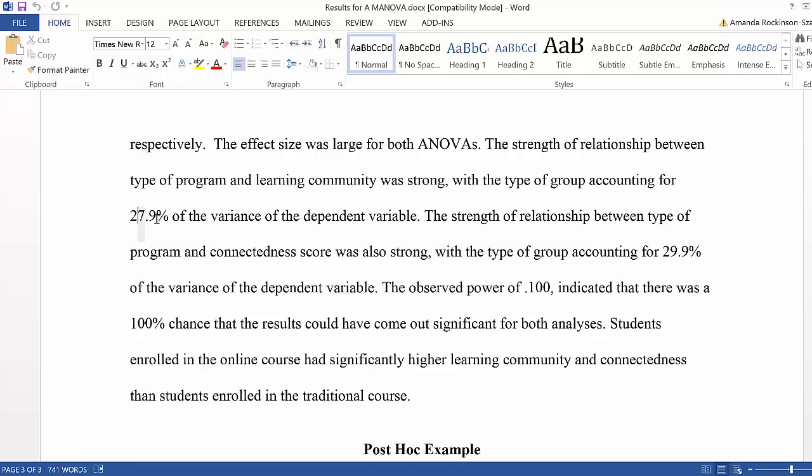For community, it was 27.9% that the type of group accounted for that much variance in the dependent variable.